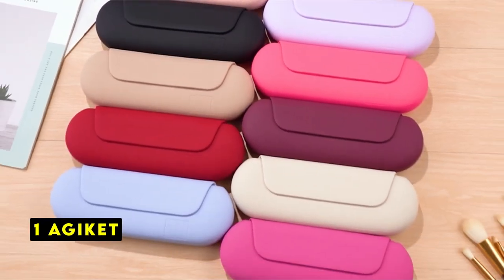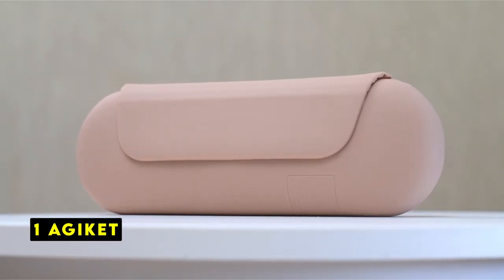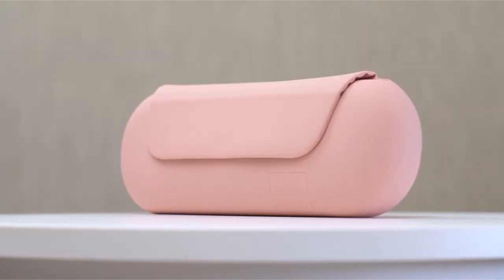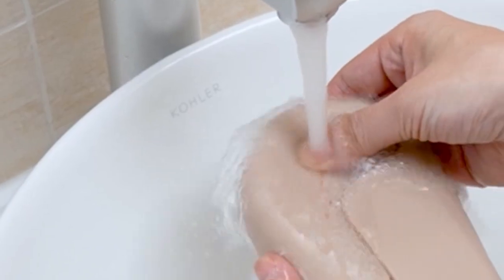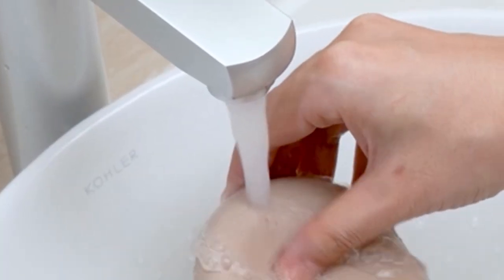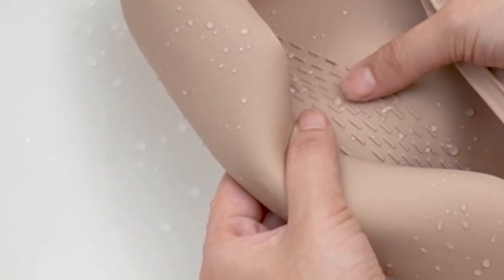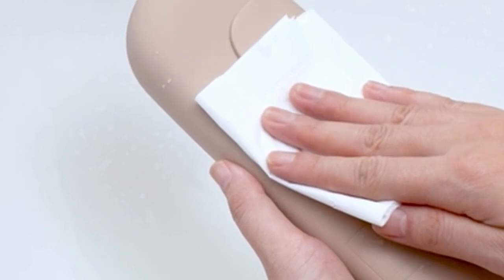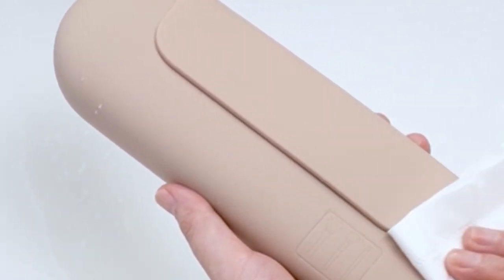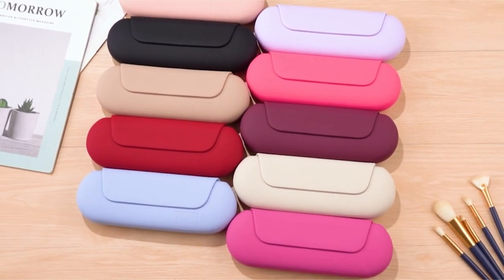Now moving to the last one is Adjukat. The Adjukat makeup brush holder offers a combination of style and functionality. Its magnetic securing clasp ensures your brushes remain securely in place, preventing them from falling out and creating a mess. The compact size of 8.86 by 3.2 by 1.5 inches makes it easy to carry in store, making it ideal for travel or everyday use.